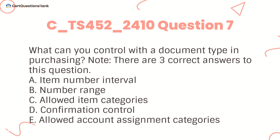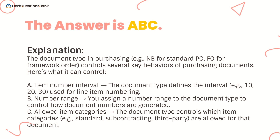What can you control with a document type in purchasing? Note, there are three correct answers to this question. A. Item number interval. B. Number range. C. Allowed item categories. D. Confirmation control. E. Allowed account assignment categories. The answer is A, B, and C.